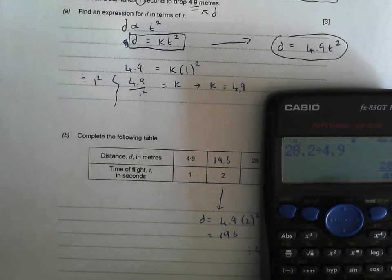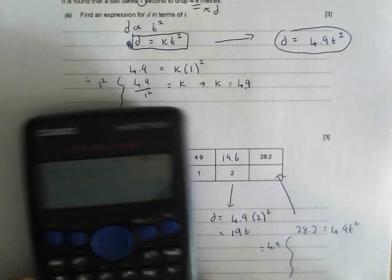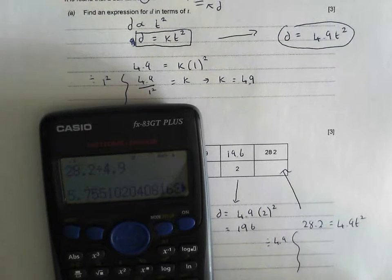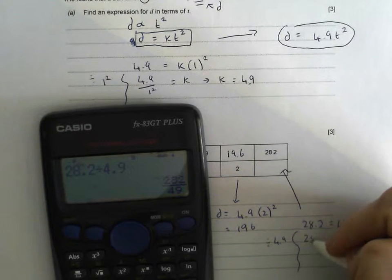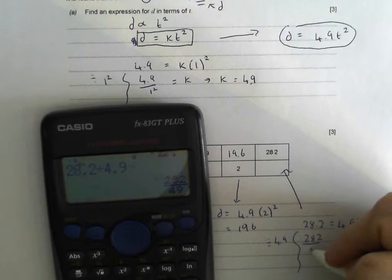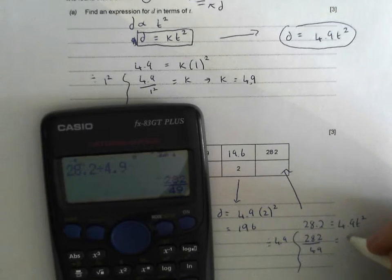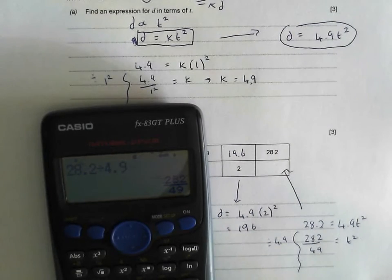That has, oh, that's come out dodgy. Flipping heck. It's come out an absolutely horrendous fraction. Where's that gone there? I've got there 282 over 49 equals t squared. I don't think this is going to be too nice.